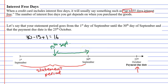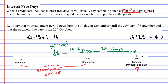So there are 16 days between the 15th and the 30th of September, and as mentioned before there are 25 days from the 1st to the 25th of October. Adding these up: 16 plus 25 gives us 41 days interest-free.